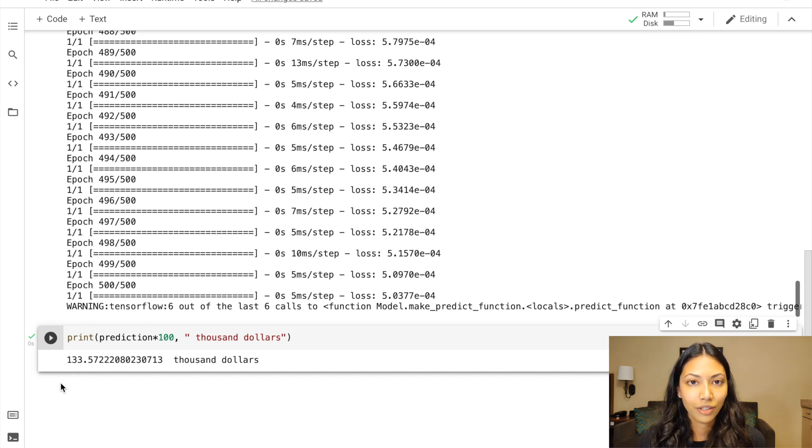Now, you might be wondering, well, why didn't it predict $130,000? Because with our basic equation that we came up earlier, we could have predicted better. But obviously, this is a deep learning model. It's going to be predicting based on learning. So this model that we've created is very useful for data sets which are not perfect like the one we have.